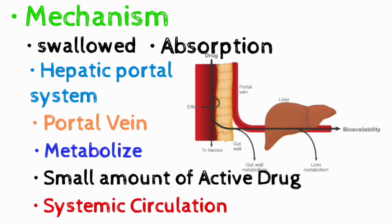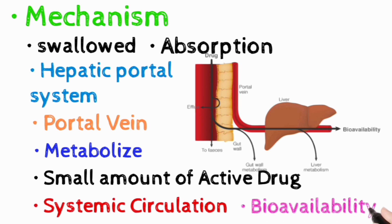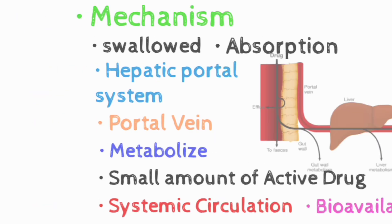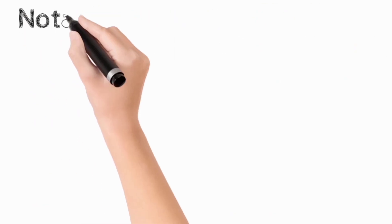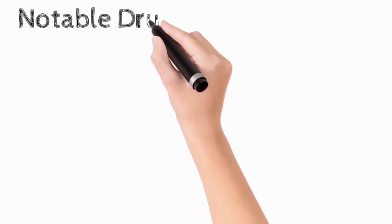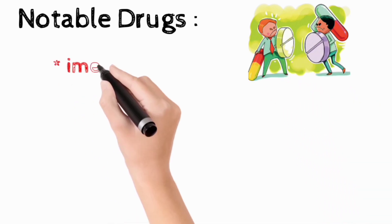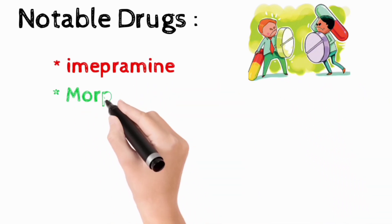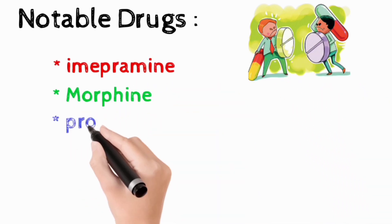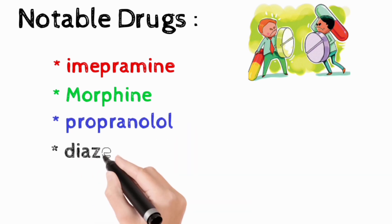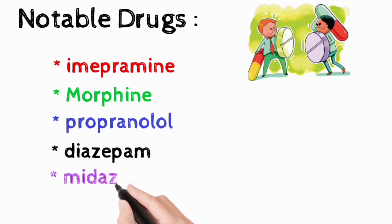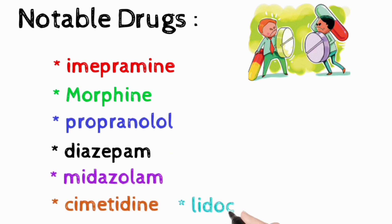This first pass through the liver greatly reduces the bioavailability of the drug. Notable drugs that experience a significant first pass effect include imipramine, morphine, propranolol, diazepam, midazolam, cimetidine, and lidocaine.